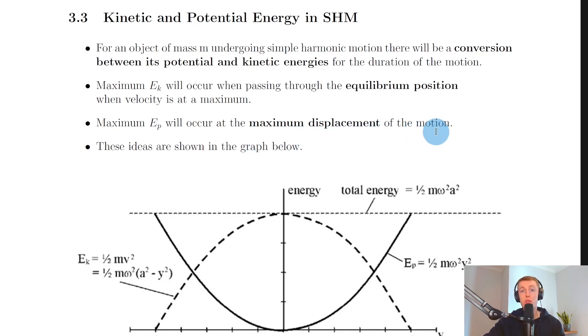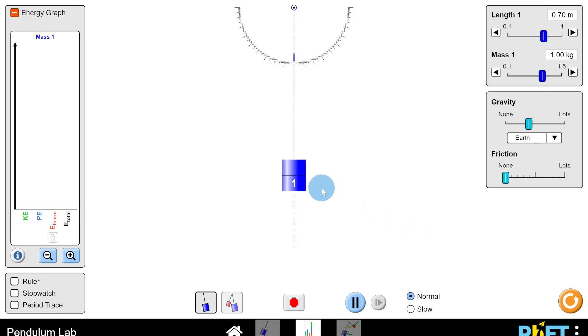Just to help you visualize this, I'm going to show you a quick simulation. Here we have a simple pendulum set up with a mass on the end of a string, and if I displace the mass from its equilibrium position and let it go, you'll see the mass will oscillate back and forth displaying simple harmonic motion.